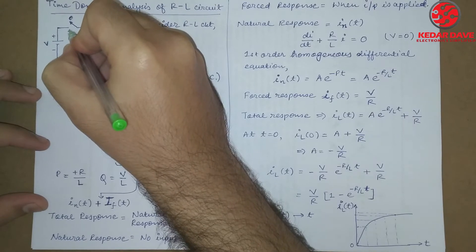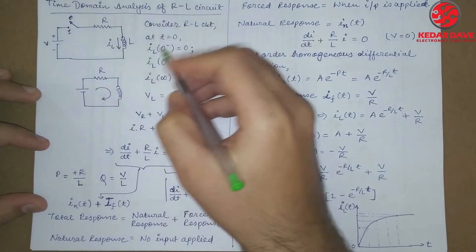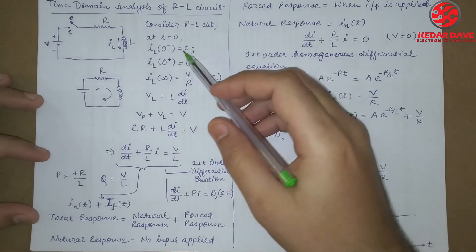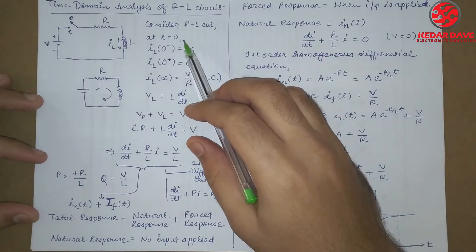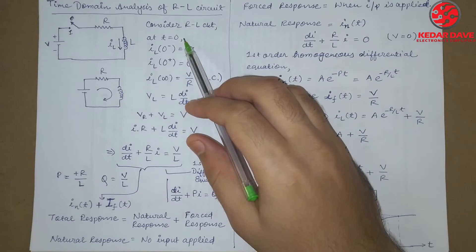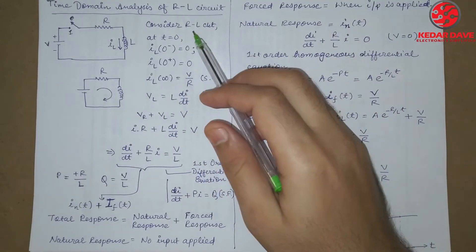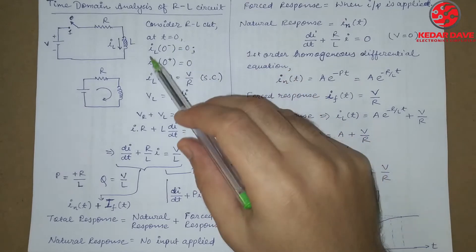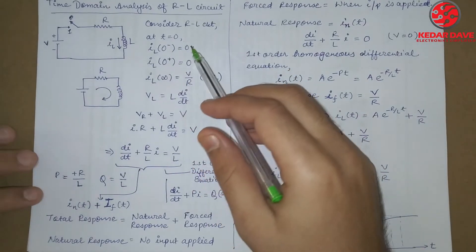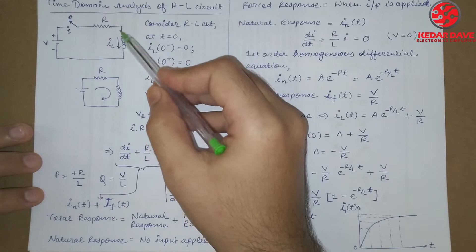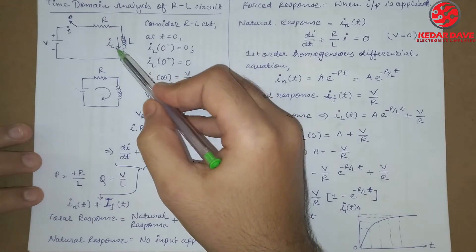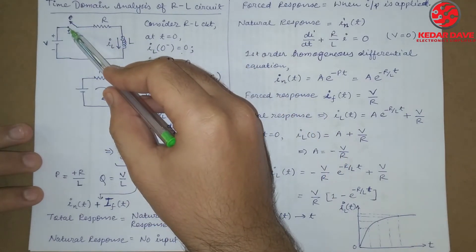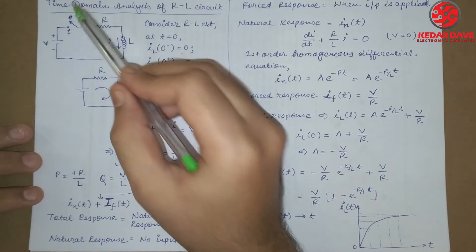This means the switch is not connected, so no current flows. As we have previously understood in the RC circuit, at t equals zero time, we look at the current and voltage through the inductor. Initially, the current through this inductor will be zero — this means just before we connected this switch.